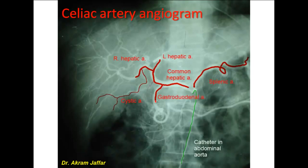The common hepatic artery also provides the gastroduodenal artery. This is the gastroduodenal artery, which passes behind the first part of the duodenum. The gastroduodenal artery provides the right gastroepiploic artery, which courses in the greater omentum along the greater curvature of the stomach.